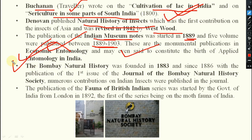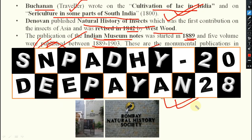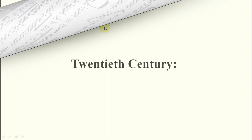The Bombay Natural History Society was founded in 1883 — very very important. Since 1886, with the publication of the first issue of the Journal of the Bombay Natural History Society, numerous contributions have been made on insect entomology. From an exam point of view: the Bombay Natural History Society was established at Bombay, founded in 1883. The publication of the Fauna of British India series was started by the Government of India from London in 1892.